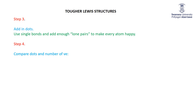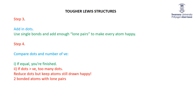The final step is to compare the dots in our picture to the number of valence electrons. If we don't have the right number of dots, we can't possibly have the right structure. If they are equal, you're done. Fairly commonly you'll find you've got too many dots. If the number of dots is greater than the number of valence electrons, we've got to reduce dots while keeping all atoms happy. We take two atoms that are bonded and each have a lone pair — erase one lone pair from each atom and add a bond between them. We're erasing four dots and adding two dots.